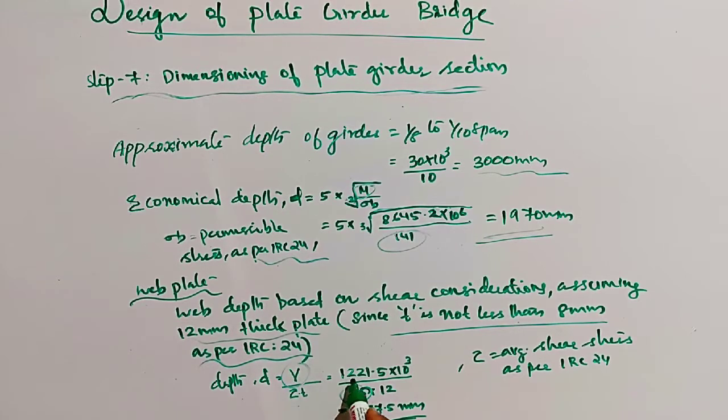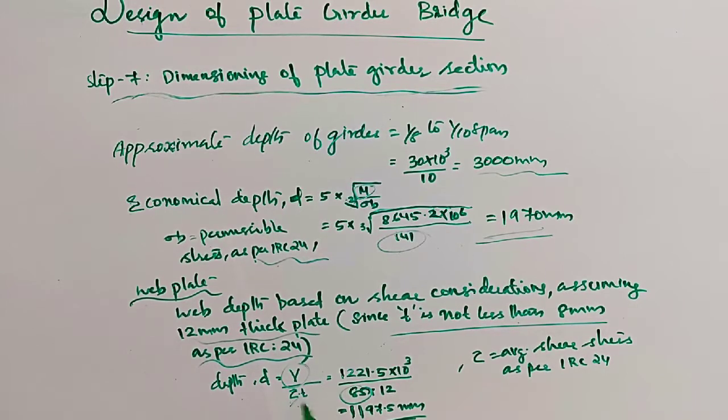The design shear force is 1221.5. Tau, the average shear stress as per IRC 24, is 85 newtons per mm squared. Then substitute these values with thickness assumed as 12 mm.